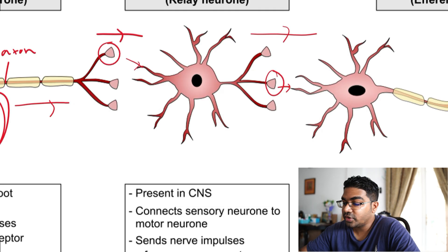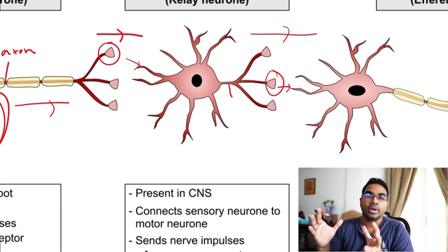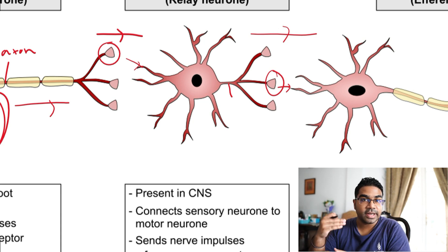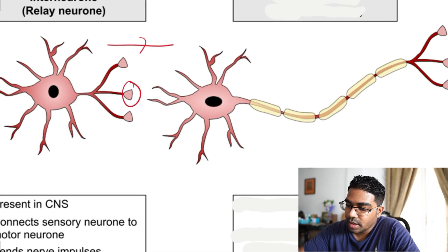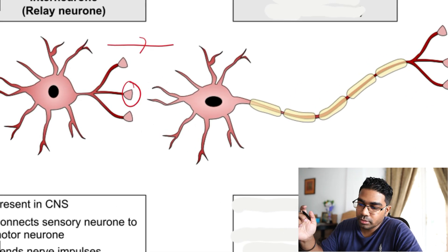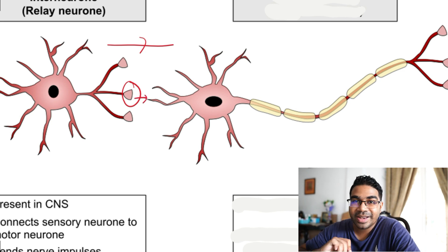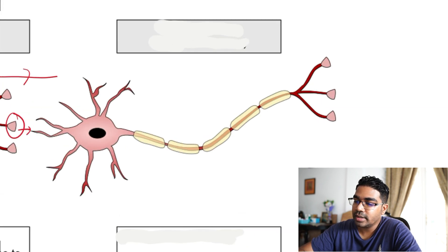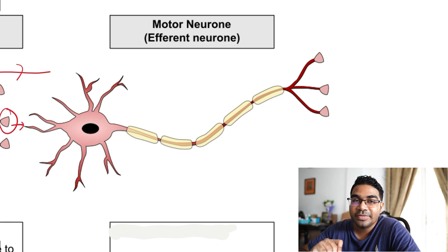The interneuron also transmits nerve impulses out to the motor neuron. Structurally, the interneuron does not have a long axon — it has a very short axon, only dendrites and a cell body, and no myelin sheath. This is how you identify the interneuron. The nerve impulse then passes via the synaptic knob to the dendrite of the motor neuron, also known as the efferent neuron.